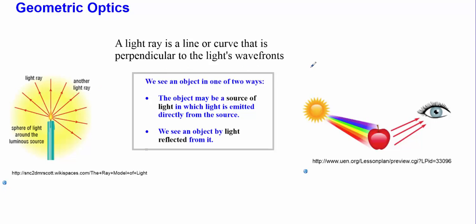Or you can see objects via reflection. Light will come in from some outside source, maybe the sky or a light bulb. It'll hit the object, then bounce off the object, and then get to our eyes. So we can see this apple, for example, because light reflected off of it, not because it was a source. So you have sources, and then you have objects that are seen via reflection.